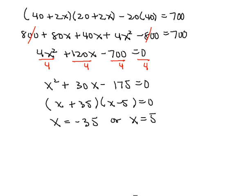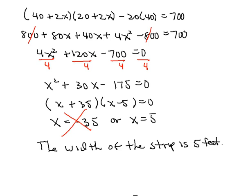Now of course we're going to have to reject the negative 35 because the width can't be a negative number, so the only legitimate value that we can use will be 5. We can conclude that the width of the strip is 5 feet.